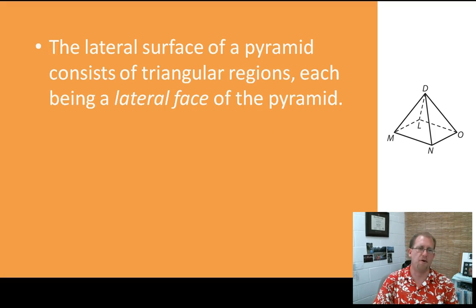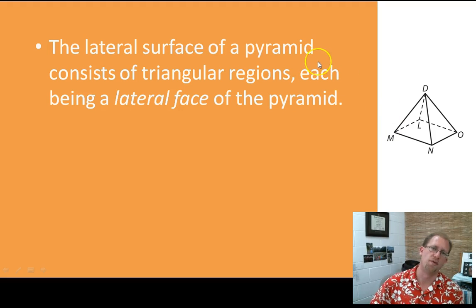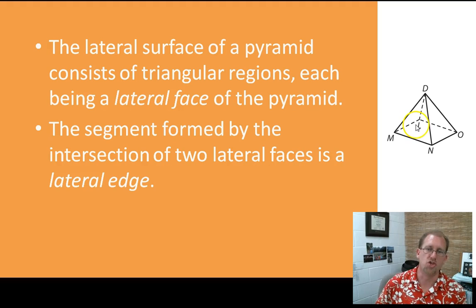The lateral surfaces of a pyramid consist of triangular regions, each being a lateral face. So in a cone, we have the lateral area. And in a pyramid, we have lateral faces because they're bounded by edges and their shapes. So this pyramid has a face MDN, which is a triangle. And another one, NDO. And another one, ODL. And LDM. Those are all faces of the pyramid. Its base would be down here, the rectangle. The segment formed by the intersection of two lateral faces is a lateral edge. So MD, DN, DO, DL. Those are all lateral edges. They form the union of two faces.